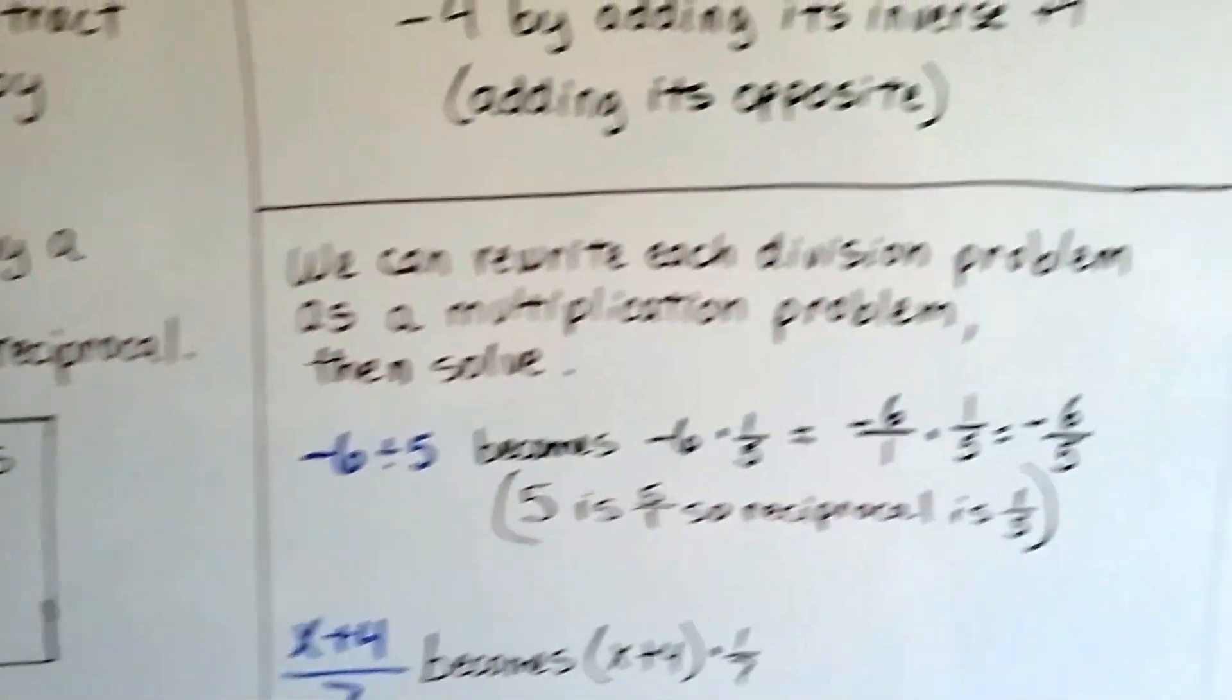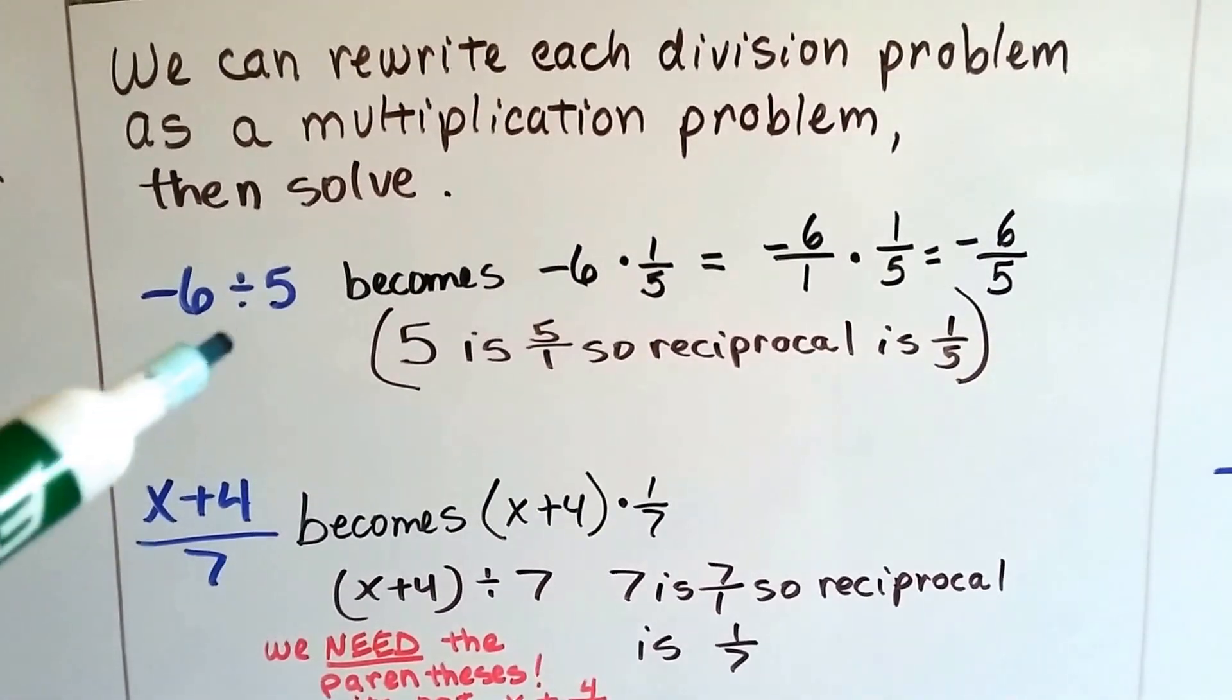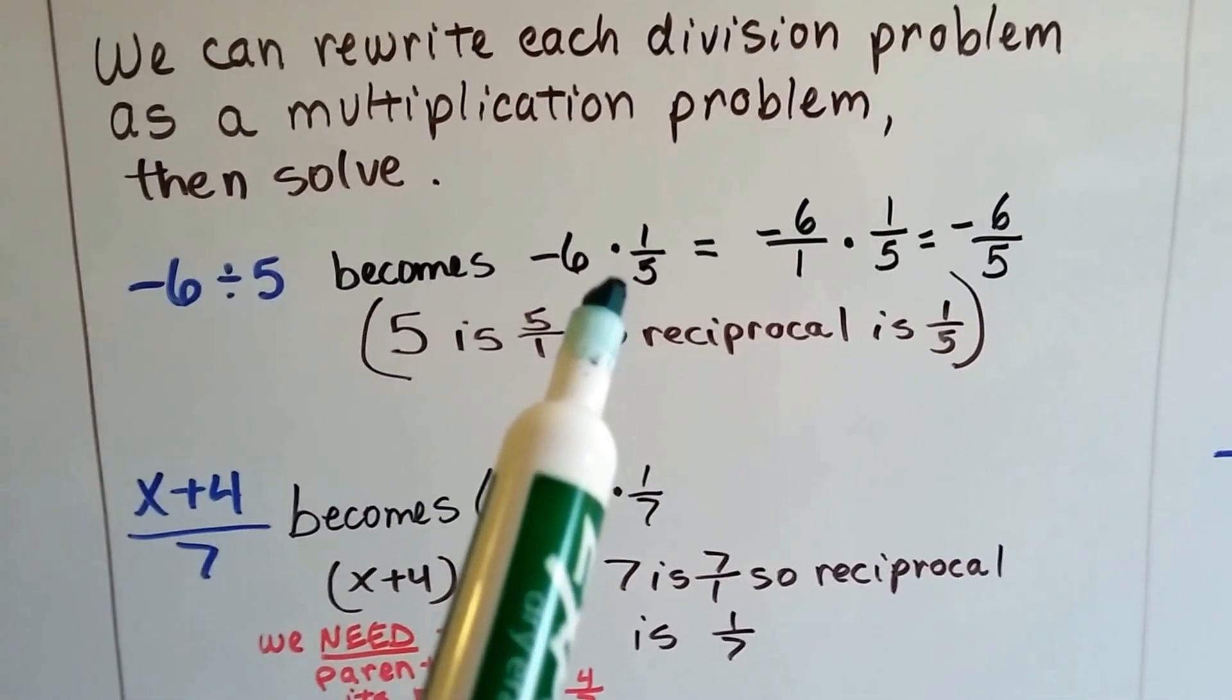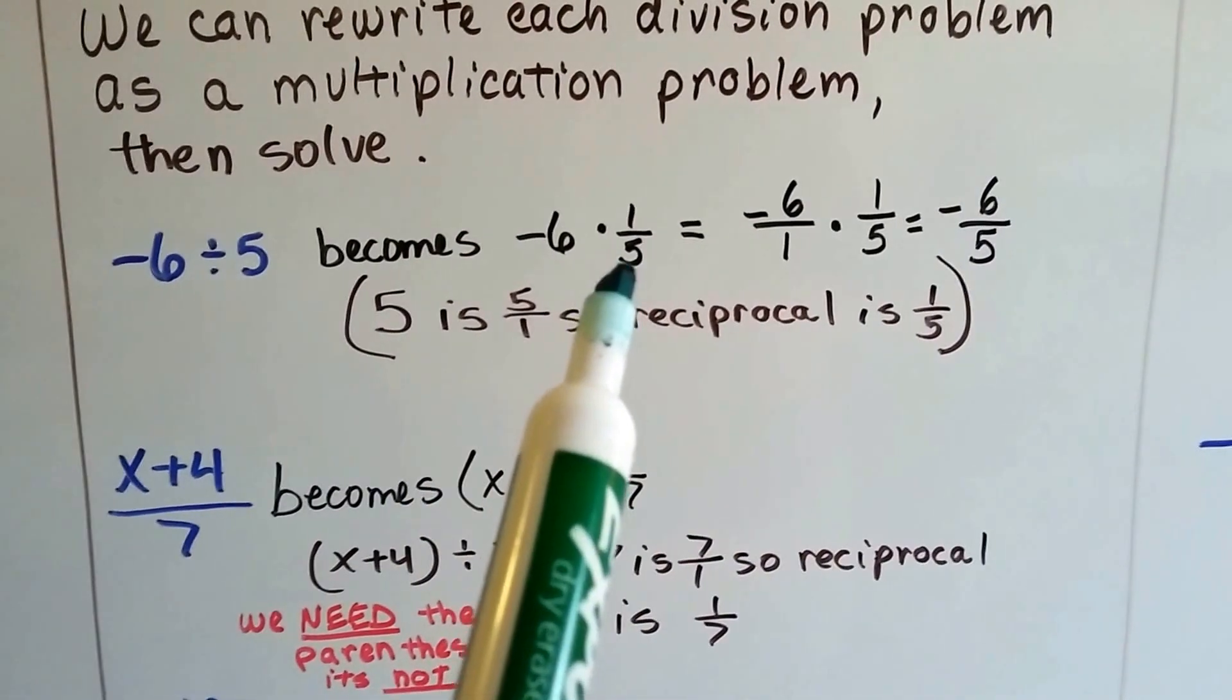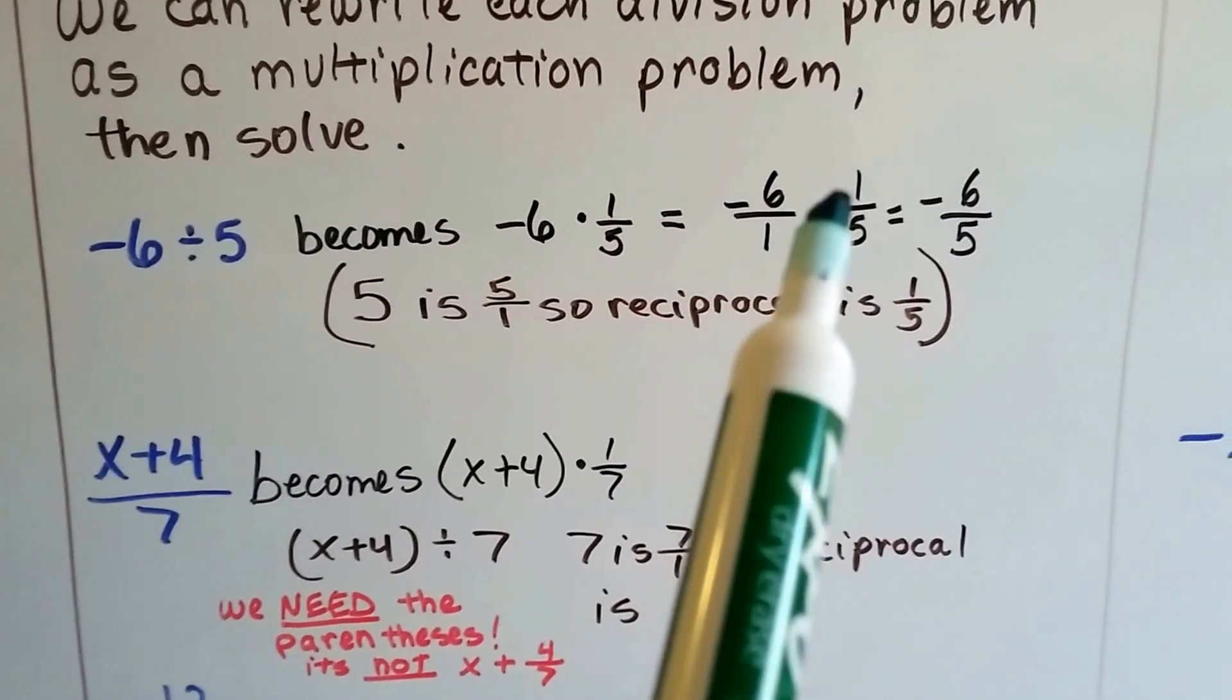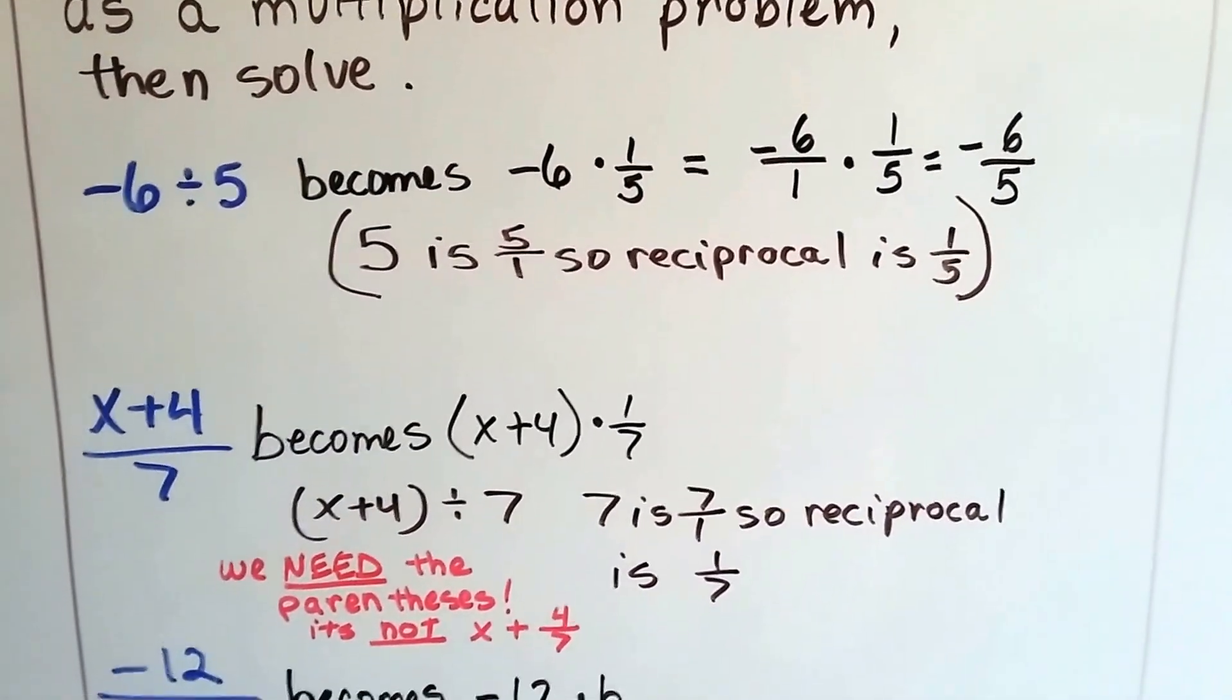We can rewrite each division problem as a multiplication problem and then solve it. If we have negative 6 divided by 5, it's going to become negative 6 times 1 fifth. 5 can be written as 5 over 1, so its reciprocal is 1 fifth. Now we just multiply negative 6 over 1 times 1 fifth. We go straight across. Negative 6 times 1 is negative 6. 1 times 5 is 5. We got negative 6 over 5.